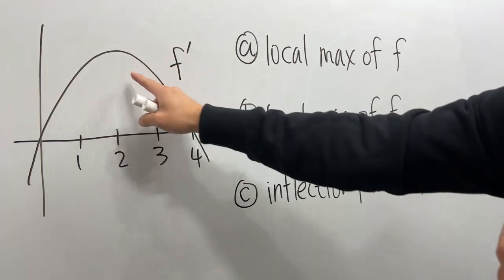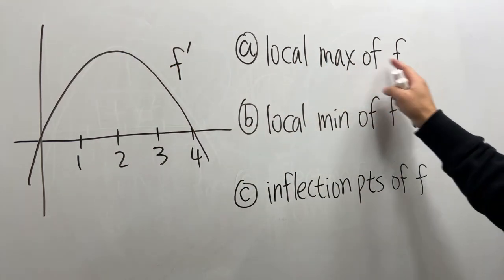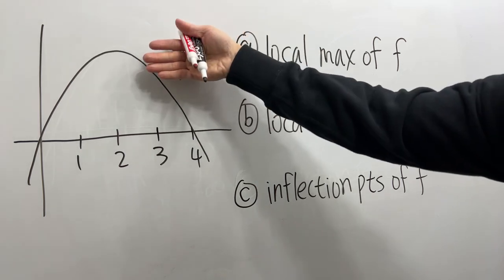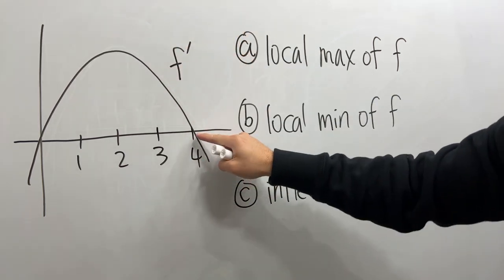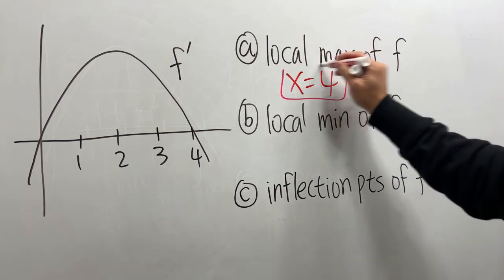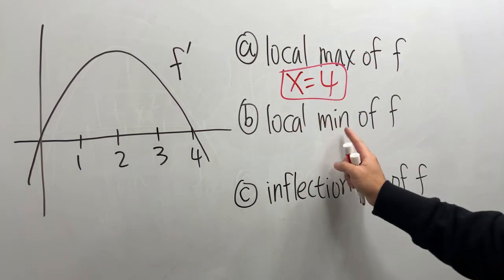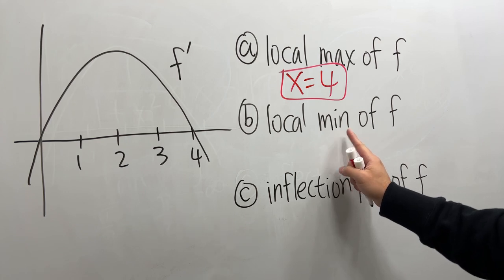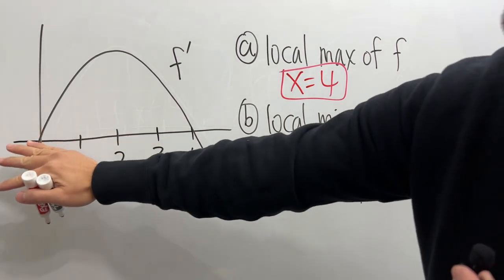Right, 2 is too easy. The local max of f is where f prime changes from positive to negative, which is at 4, so x equals 4. Next, local minimum—that is when the first derivative goes from negative to positive.